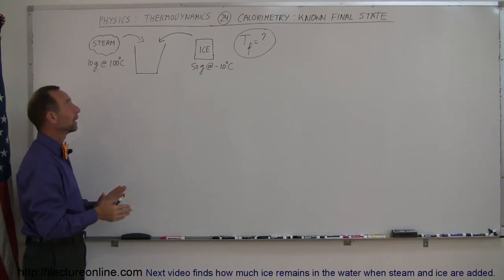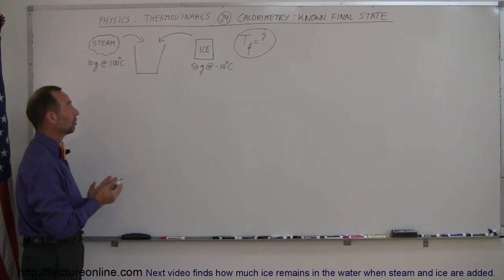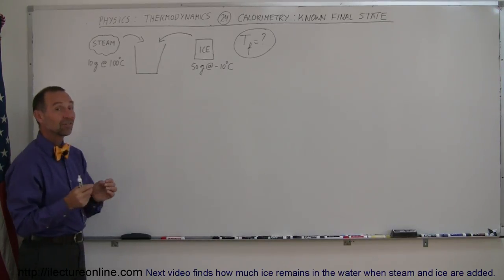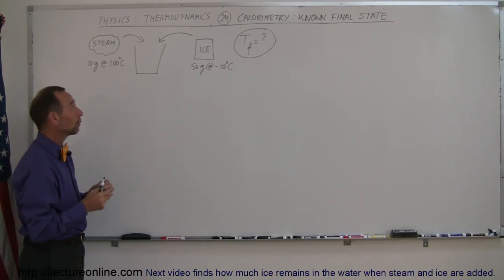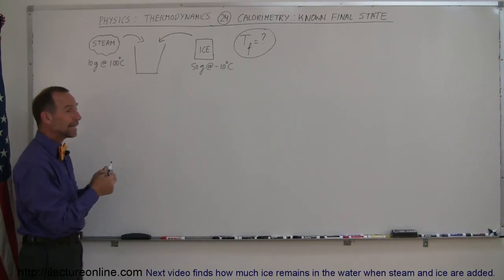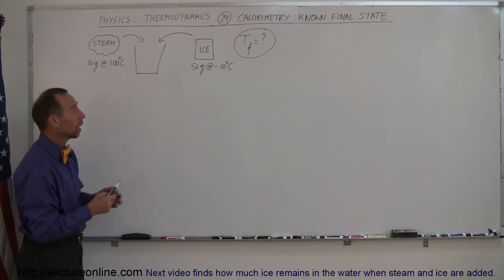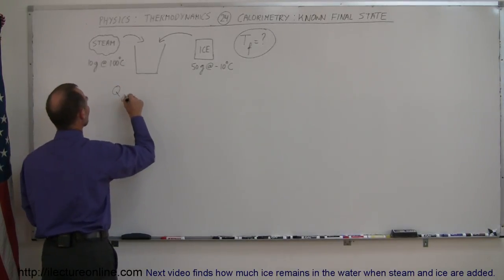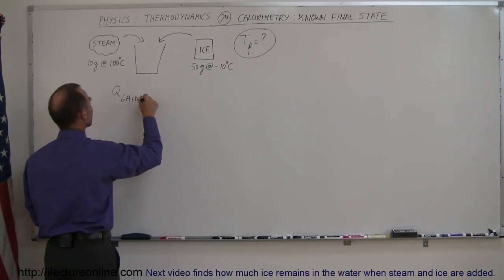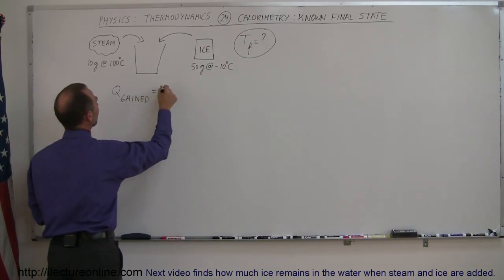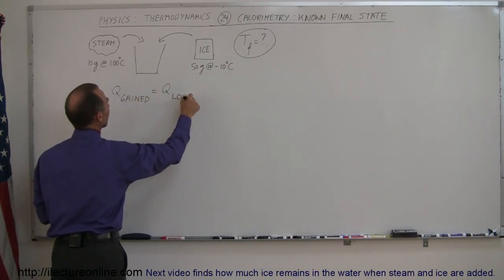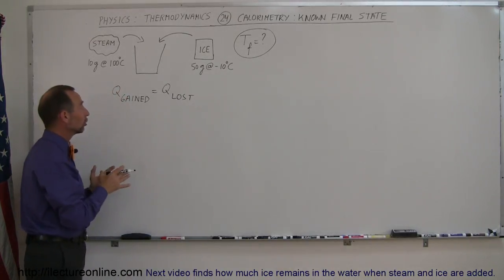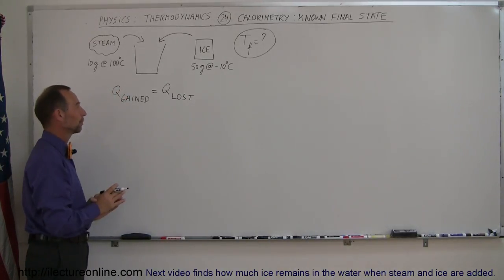Let's say we know how to mix them, and the question is how would you figure out the final temperature. Since this is a calorimetry problem, we're going to set Q gained equal to Q lost. As long as all the terms in Q gain and Q lost are positive, this will work.